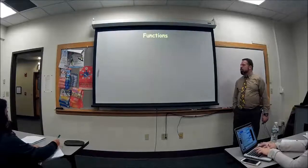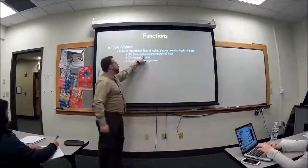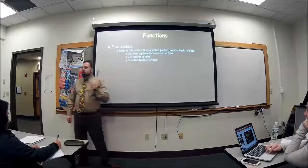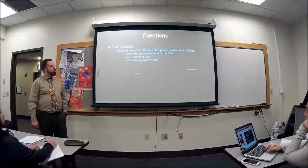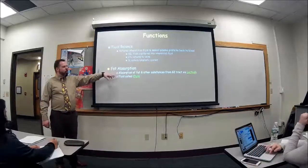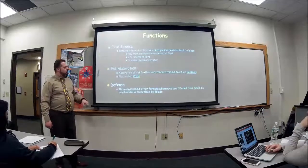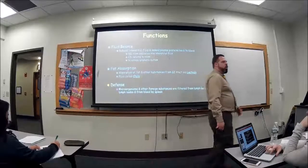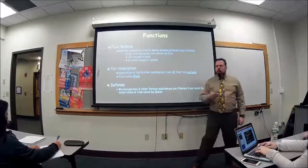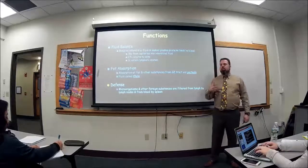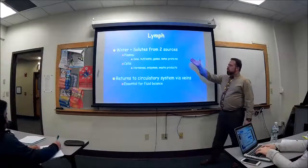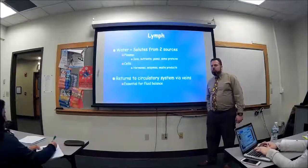So the functions: 30 liters goes from the capillaries into interstitial tissue. 27 liters returns to the veins, with the remaining 3 liters going through the lymphatics to screen for bacteria and so forth. Other functions include fat absorption in the GI tract with the lacteals — those are modified lymphatics. And then of course defense: not only do we get that 3 liters back, but as it comes back, we're able to look through it to make sure there's no bacteria, viruses, or cancer cells to destroy.